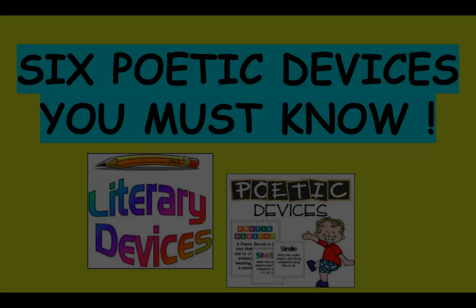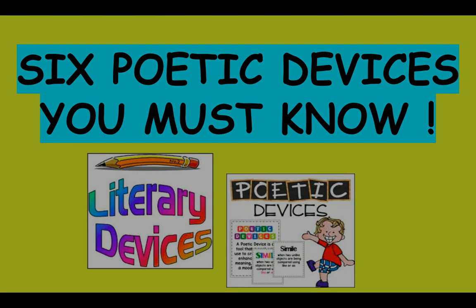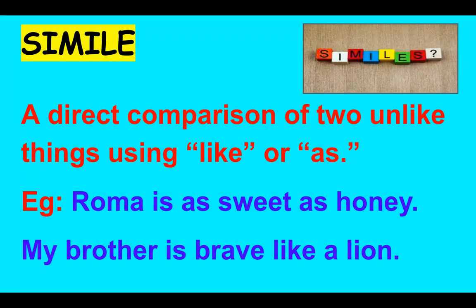Six poetic devices you must know. The first one is simile. A simile is a direct comparison of two unlike things using the words 'like' or 'as.' In simple words, a simile is a comparison between two things, but do not forget to use the words 'like' or 'as.'